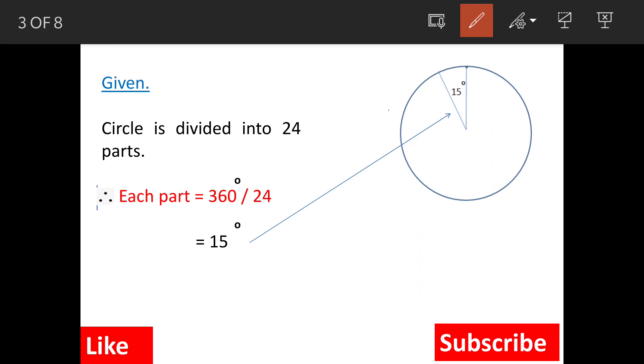Now, the circle has 24 parts and the internal angle we know is 360 degrees. When we divide 360 by 24, we get 15 degrees. Each segment or each point is going to have an angle of 15 degrees.